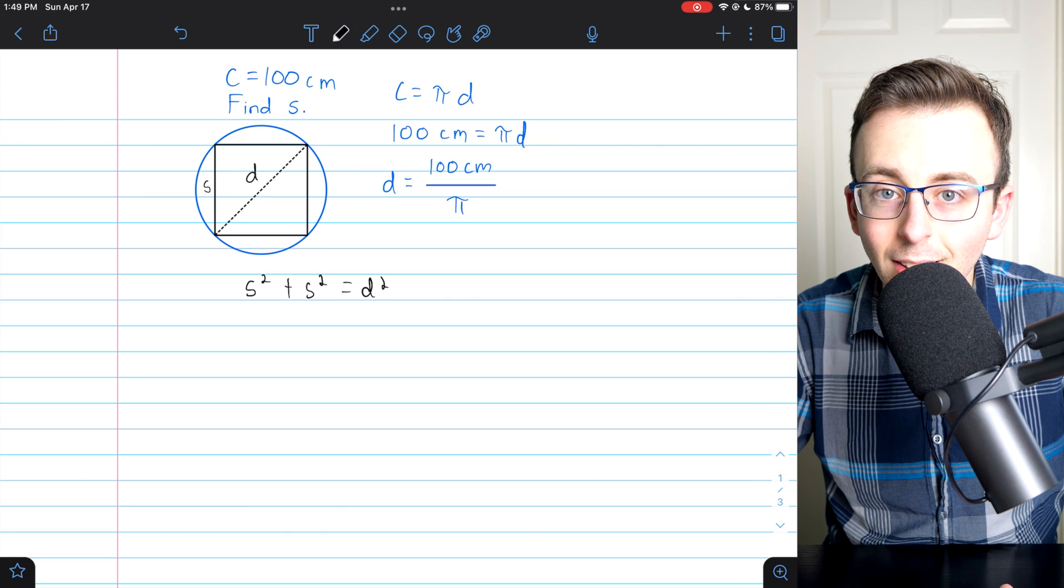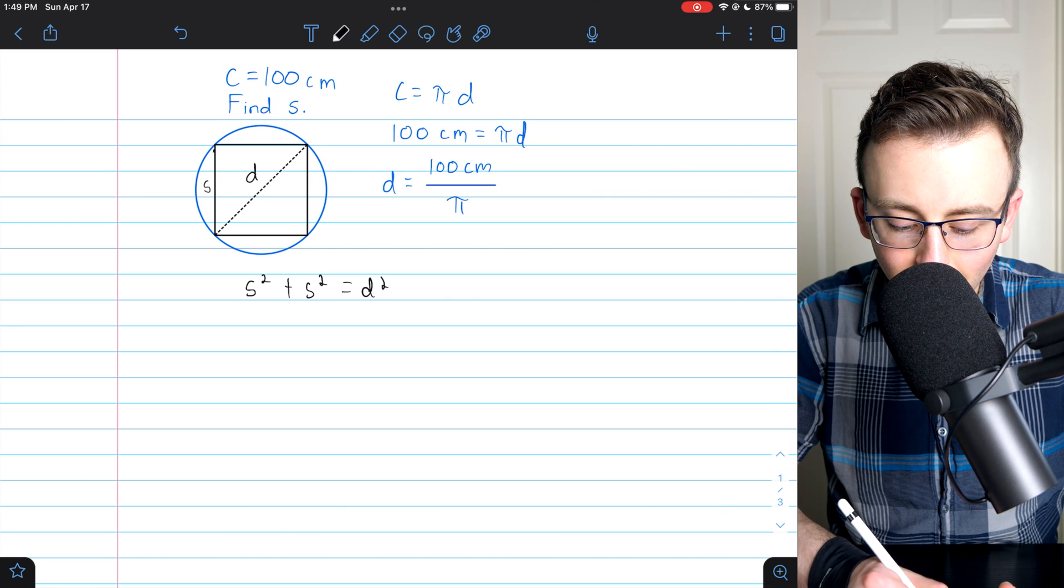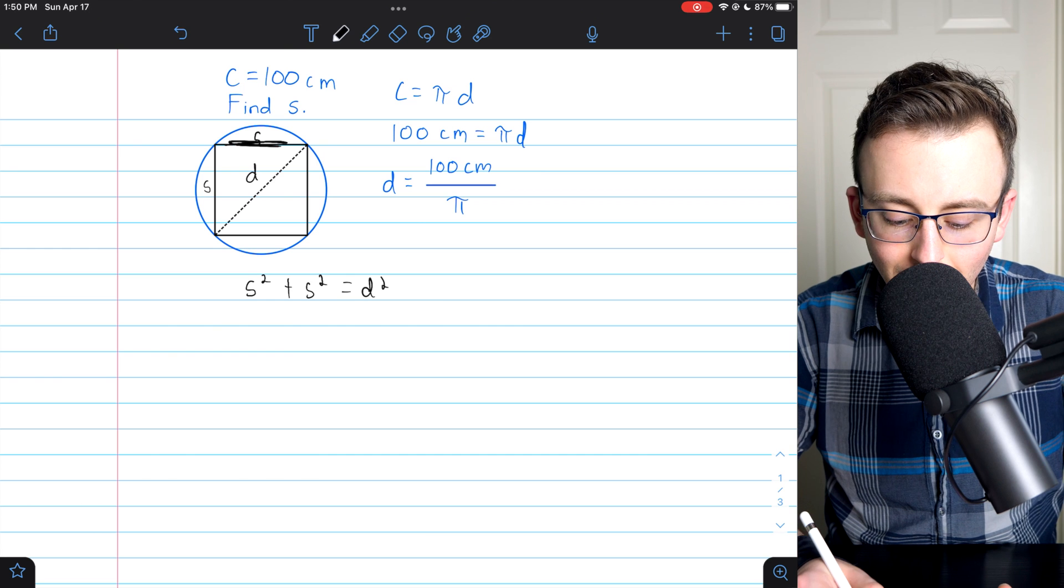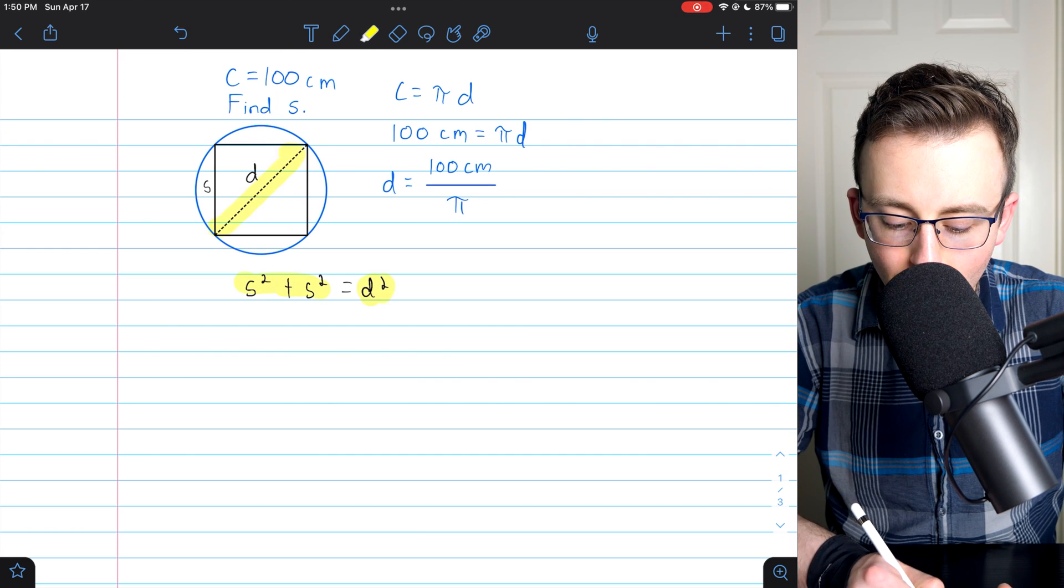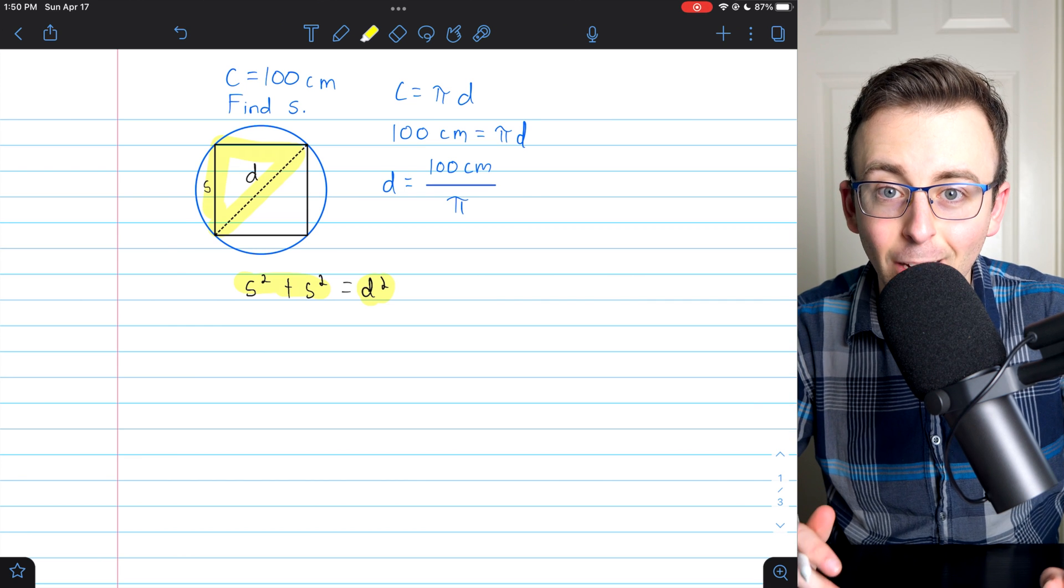Of course, every side of a square has the same length. So this is s, this is s, and the sum of the squares of the legs has to equal the square of the hypotenuse. That's classic Pythagorean theorem.